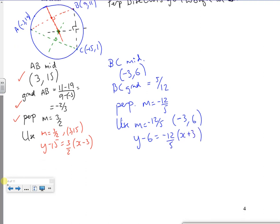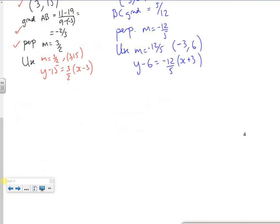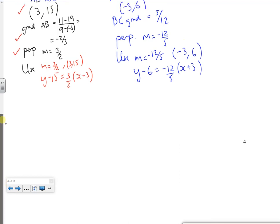Right. So to solve these simultaneously, it's better to have it X and Y equals a number. So I've got, if I take the 2 up, I've got 2Y minus 30 is 3X minus 9. So I've got, if I take the X's over, take the Y's over, I've got 3X minus 2Y, take the 9 over, is minus 21.